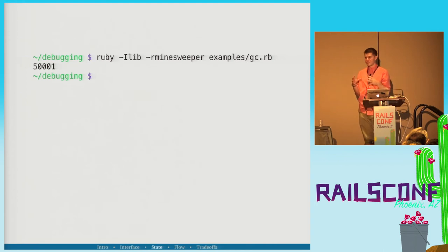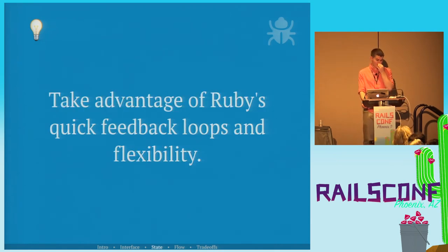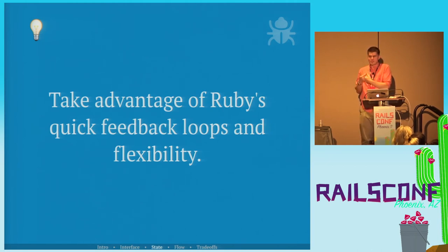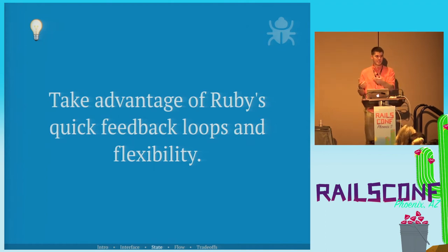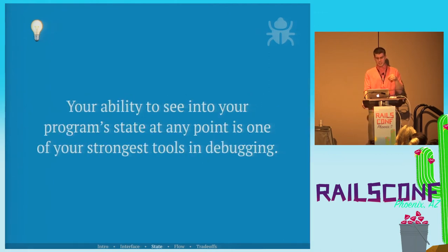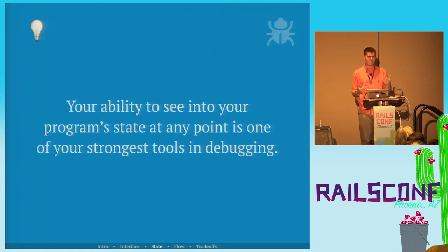Lessons from state problems: take advantage of Ruby's quick feedback loops and flexibility. I was able to instance_eval a status struct and button in there and it didn't matter — Ruby's not checking whether you conform to some interface or marker protocol saying these objects can be substituted. Your ability to see into your program state at any point is one of your strongest tools in debugging. You can put this code anywhere in your application and get the information quickly.